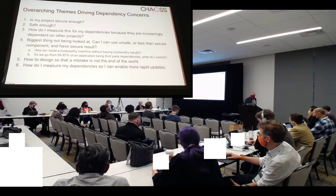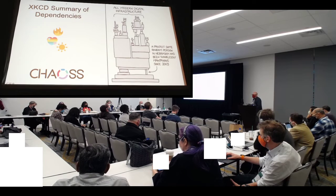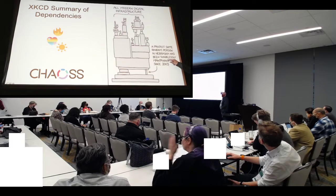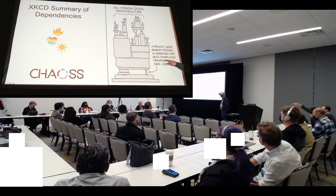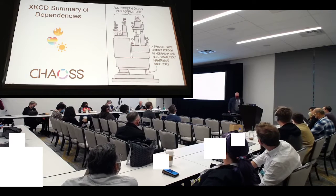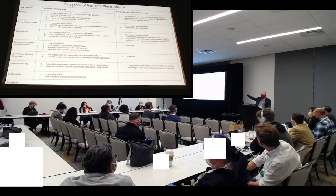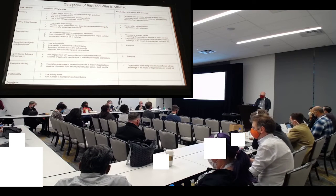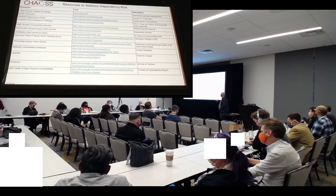Also, designing so that a mistake isn't the end of the world, and then ultimately measuring dependencies. The dependency problem looks like this classic XKCD model where there's some random project from a person in Nebraska — been maintaining this since 2003. In general, this is a list of the categories of risk that we look at, and so dependencies is just one dimension of the risk working group's way of looking at things. This gives you an idea of the array of things that we looked at, talked about, and went through to understand dependencies.